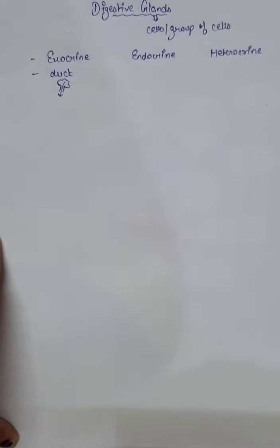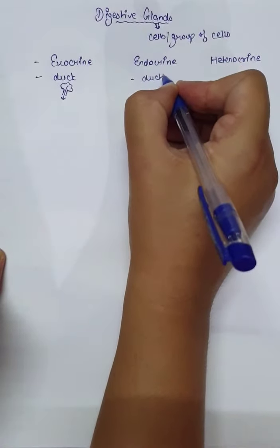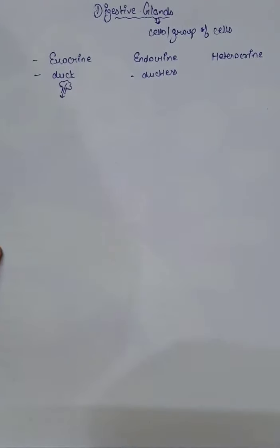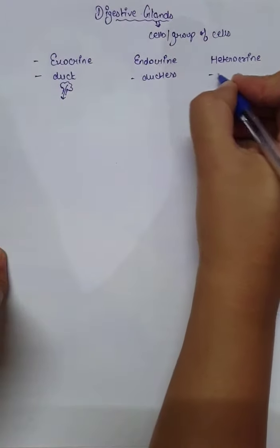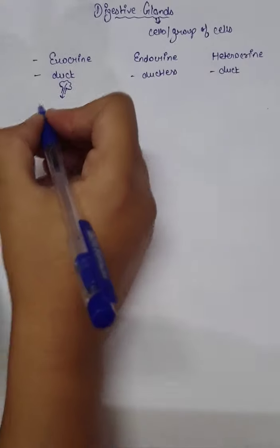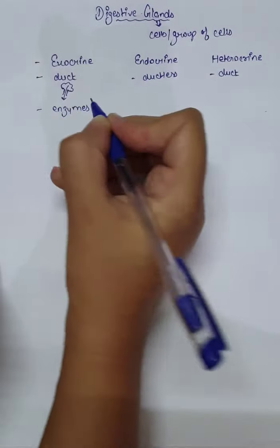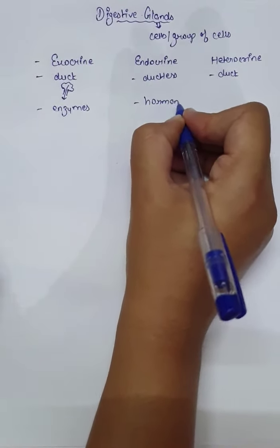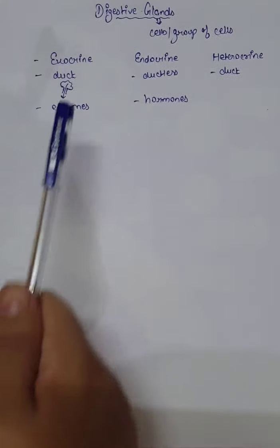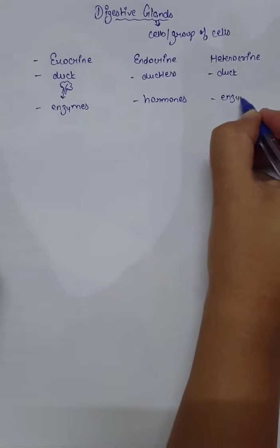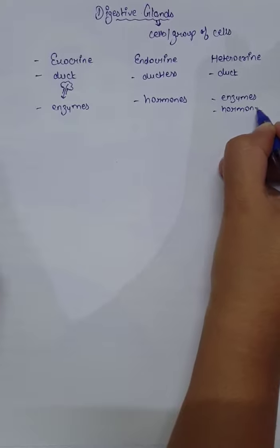As we are discussing digestive glands, most of the digestive glands are Exocrine in nature. Endocrine glands do not have ducts. Heterocrine glands have ducts but function as both Exocrine and Endocrine. Exocrine glands secrete enzymes, while Heterocrine glands release both enzymes and hormones. Most digestive glands are Exocrine, and some are Heterocrine.